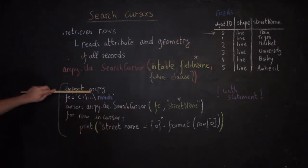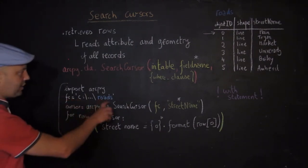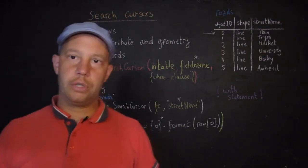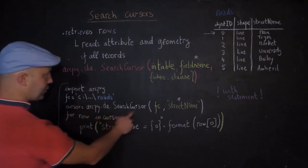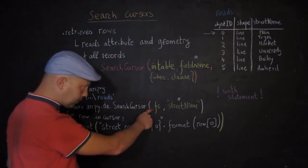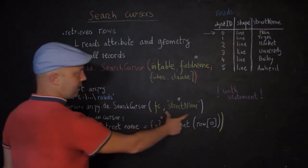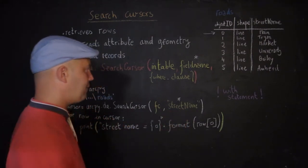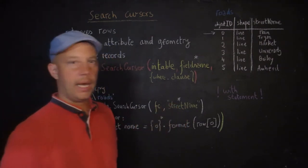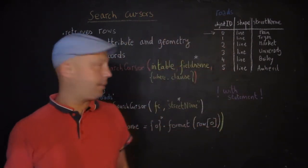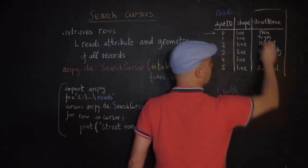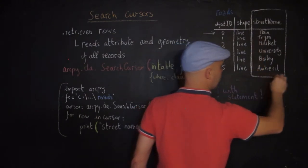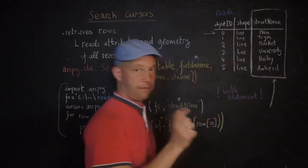Here is the structure of a simple script to extract and print the street name for each record. You have import ArcPy, a variable FC set to the directory and table name. Then the cursor is set to ArcPy.da.SearchCursor on the feature class. Specifying the street name field means the cursor only considers that particular column.